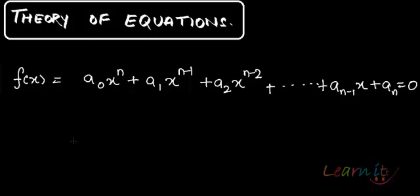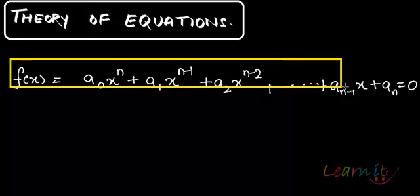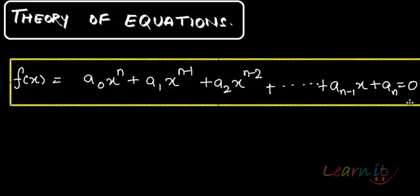Any equation is actually of a form as given here. So we have f(x) equals to a₀x to the power of n plus a₁x to the power of n minus 1. This is decreasing power of x with a coefficient attached to it. So that's a polynomial.